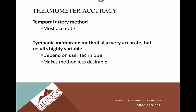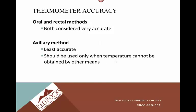The accuracy depends on user technique, and that can make the tympanic method less desirable due to room for human error — though the method itself is very accurate when performed properly. Oral and rectal methods are both considered very accurate, and oral is still used a lot because of its ease of use. Rectal is still considered accurate if you don't have access to temporal artery or tympanic, though slightly less accurate than those two. The axillary method — underneath the armpit — is considered the least accurate and should only be used when temperature cannot be obtained by other means. In order: temporal artery, tympanic, rectal, oral, and lastly axillary.